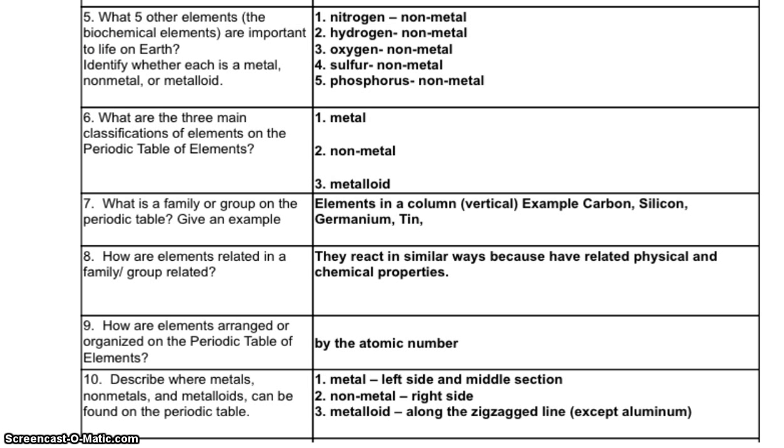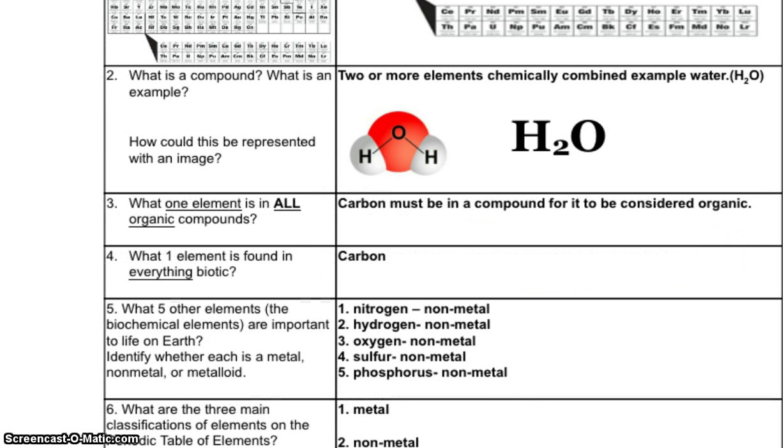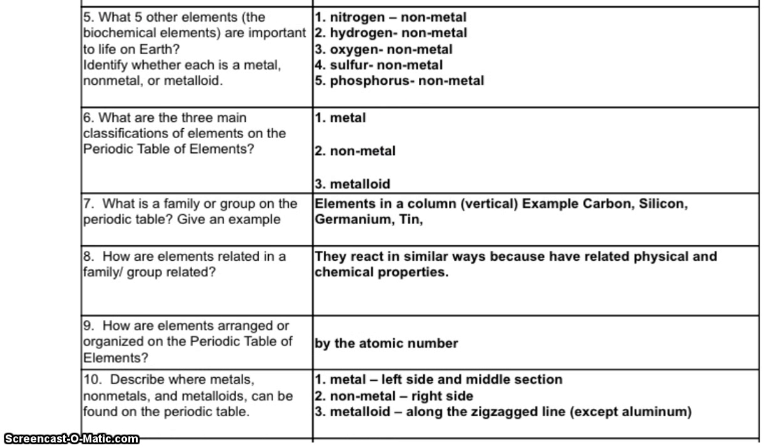Number 8. How are elements related in a family or group? You know, in our families, we're related somehow. So we have common characteristics. And here we can see in our answer, they react in similar ways because we have related physical and chemical properties. Just like in our families with our parents, brothers, sisters, aunts, uncles, and so forth. Number 9. How are elements arranged or organized on the periodic table of elements? Well, I like this because it's nice and simple. They're arranged by atomic number. That's the number that is at the top, usually, of the atomic symbol or the element symbol.